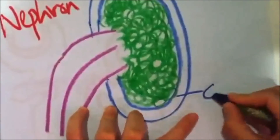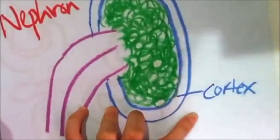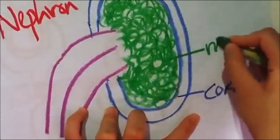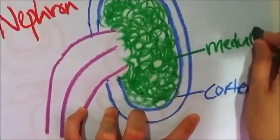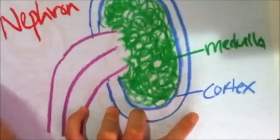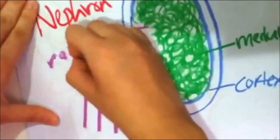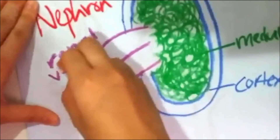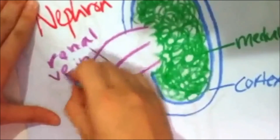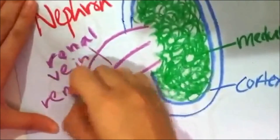This part is known as cortex, while this part is known as medulla. And lastly, this part is known as renal vein or renal artery.